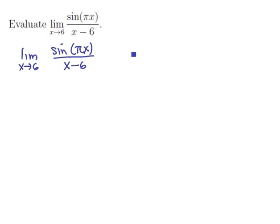The first thing to try is plugging in. We would have the sine of pi times 6 over 6 minus 6. The top evaluates to 0, the bottom evaluates to 0.